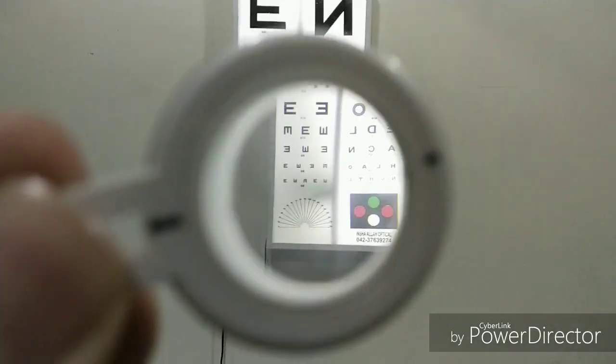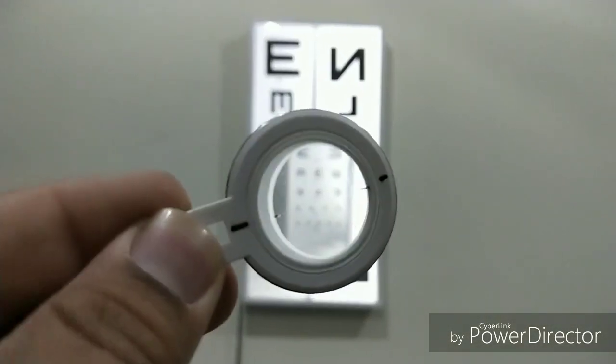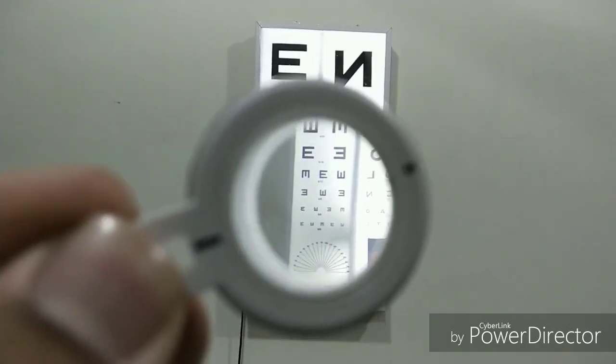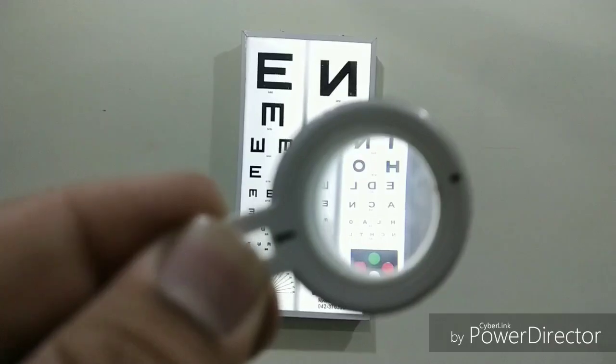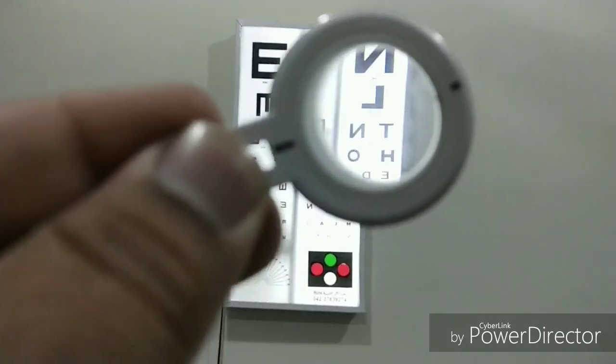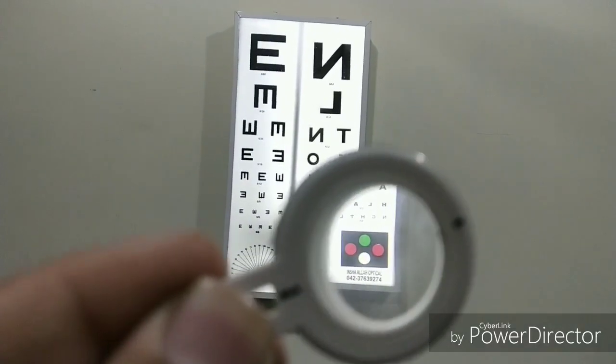Now here you can see that the image is displaced. It's a prism. Prisms have a base and apex. The apex is thinner, the base is thicker. They are given in diplopia and squint patients. They move the image towards the base.